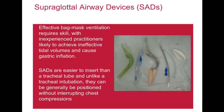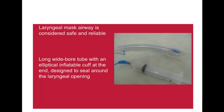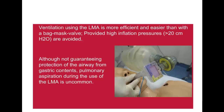Supraglottic airway devices are easier to insert than a tracheal tube and can generally be positioned without interrupting chest compressions. The laryngeal mask airway is a reliable and safe device that can be introduced easily with a high degree of success after a short period of training. The LMA is a long wide bore tube with an elliptical inflatable cuff designed to seal around the laryngeal opening. Ventilation using an LMA and a self-inflating bag is more efficient and easier than with bag mask valve alone, provided that high inflation pressures are avoided. Although not guaranteeing protection from gastric contents, pulmonary aspiration during LMA use is uncommon. When an LMA can be inserted without delay, it is preferable to avoid bag mask ventilation altogether as the risk of gastric inflation and regurgitation is reduced.